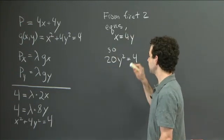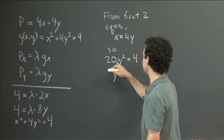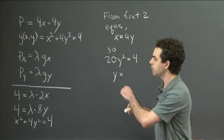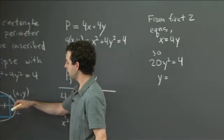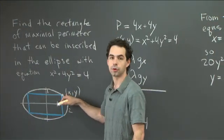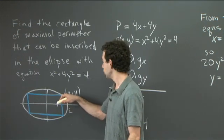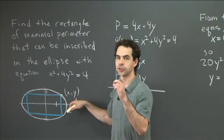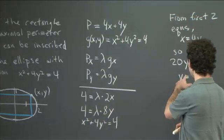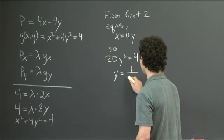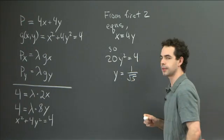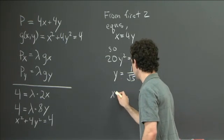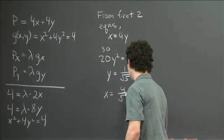We can solve for y: y squared equals 1/5. So y equals plus or minus 1 over the square root of 5. But since we took x, y to be the upper right-hand corner — the first quadrant corner of our rectangle — y is always positive. So there's only one root to consider: y equals 1 over the square root of 5. And since x equals 4y, we get x equals 4 over the square root of 5.